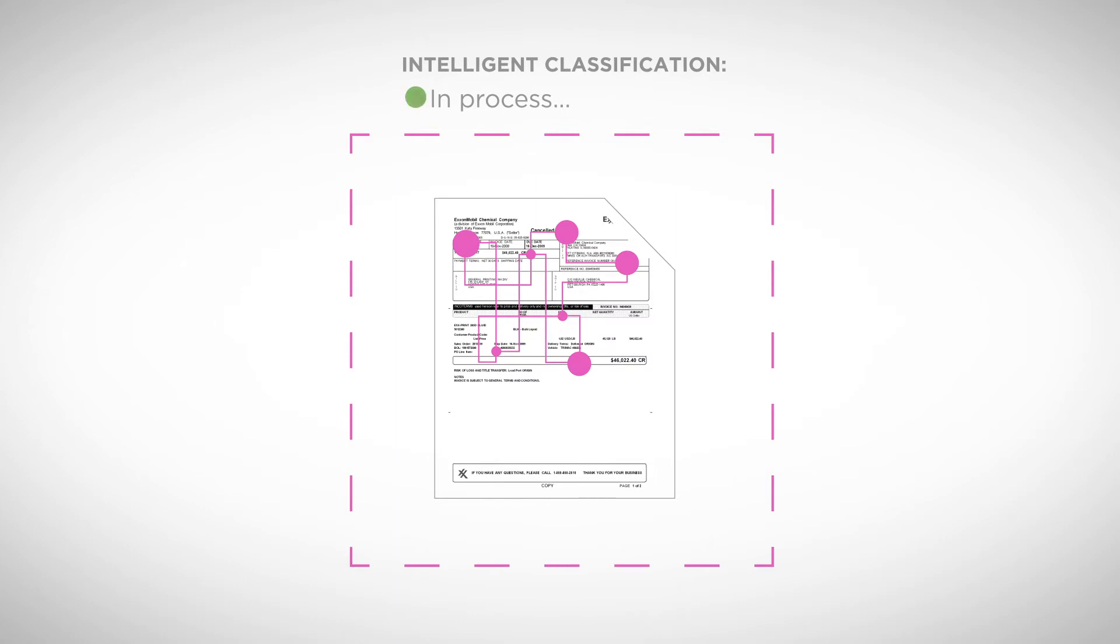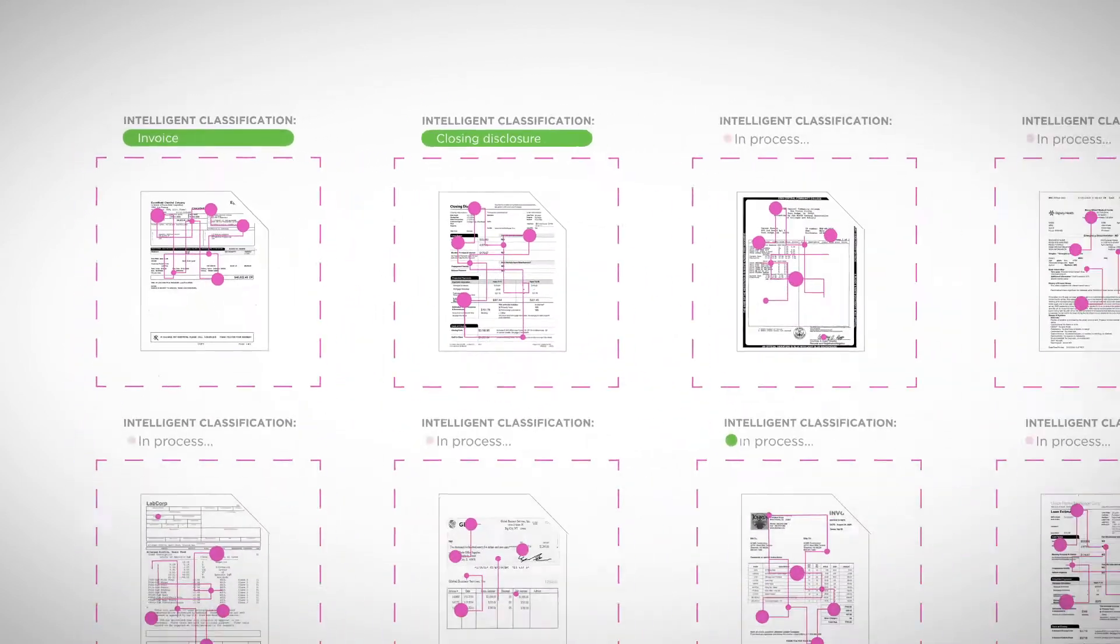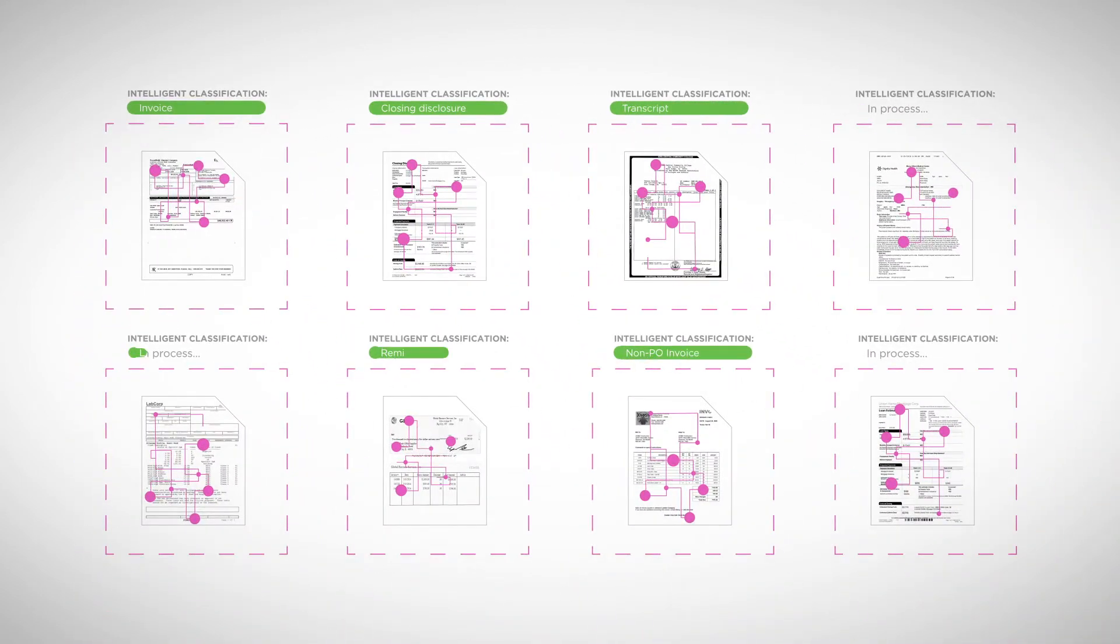From the patterns that emerge, Brainware learns what uniquely classifies a document type and applies that knowledge to future documents, even those that vary from the original.